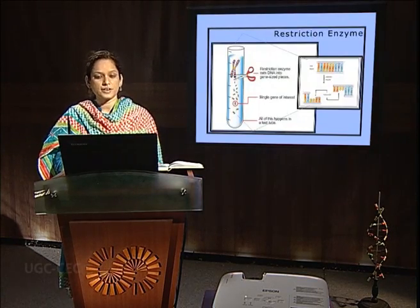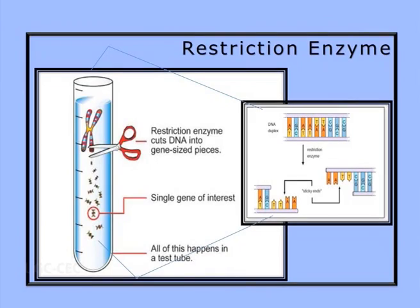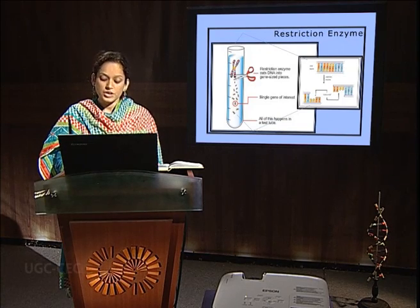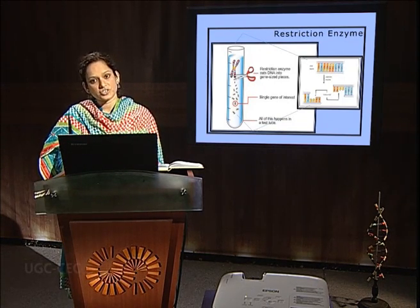Let us first see what restriction enzymes are. Restriction enzymes are synthesized by the bacterial cell as part of innate immunity. These enzymes are synthesized by the cell to protect themselves from foreign attack by bacteriophages. These endonucleases recognize a particular set of bases and after recognizing them, cleave the phosphodiester backbone at those particular sites. With this knowledge, it is now possible to develop wide applications of restriction enzymes.